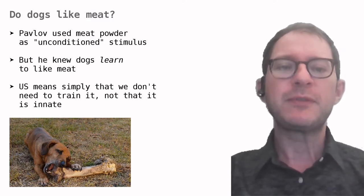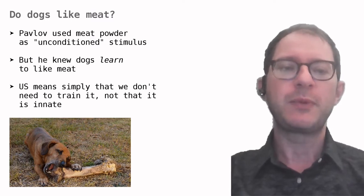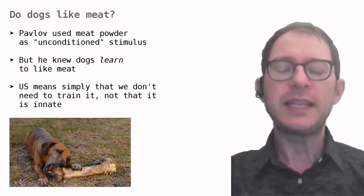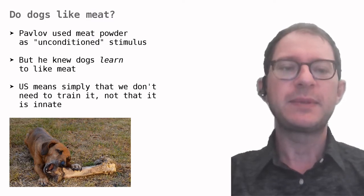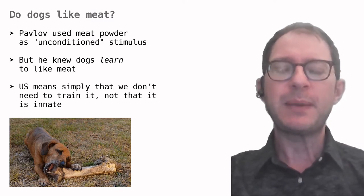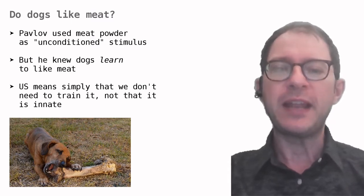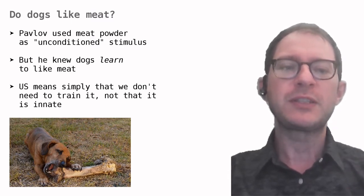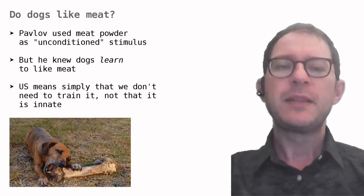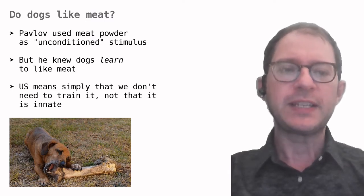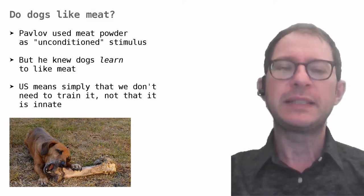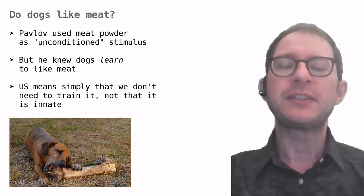But already Pavlov knew that dogs are not born with a taste for meat. Around 1910, another Russian scientist named Zitovich had raised puppies on milk alone for the first three months of their lives, and then observed their reactions when they saw solid food for the first time. The puppies did not show any interest in either meat or bread. Only after tasting these foods a couple of times they started liking them.